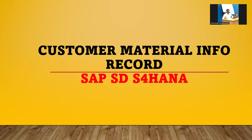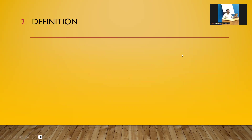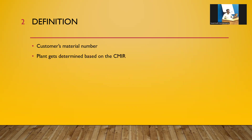Hello everybody, Swaminath here. Today we are going to see customer material info record in SAP SD. The definition is customer's material — the customer will give you a purchase order, and based on the purchase order they give you a material number, and that material number can be maintained in the info record. The plant gets determined based on the customer material info record.